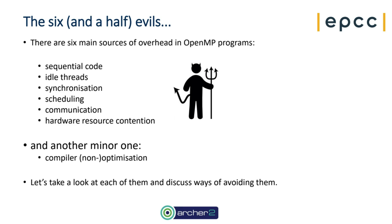I'm going to structure this by talking about the different sorts of overheads that can come up with OpenMP programs, and some potential ways to work on and fix them. I'm going to talk about the six and a half evils. These sources of overhead fall into about six different categories: sequential code, idle threads, synchronization, scheduling costs, communication, and hardware resource contention. There's also a minor one — compiler non-optimization — which I'll mention at the end.